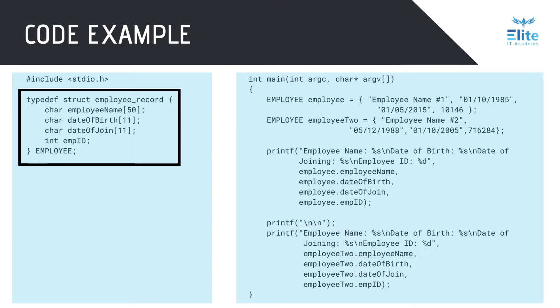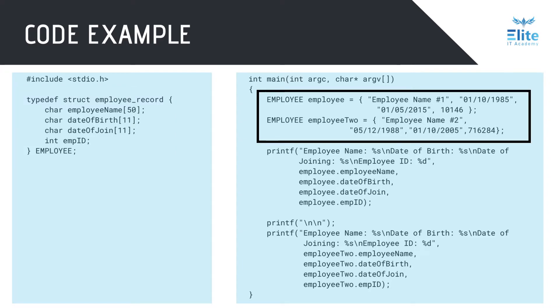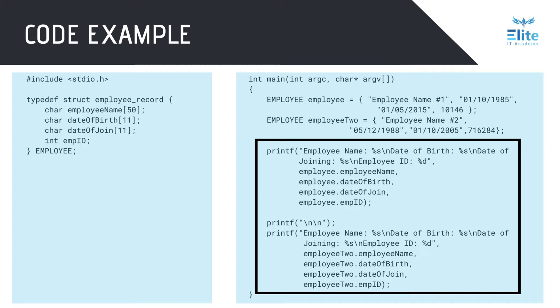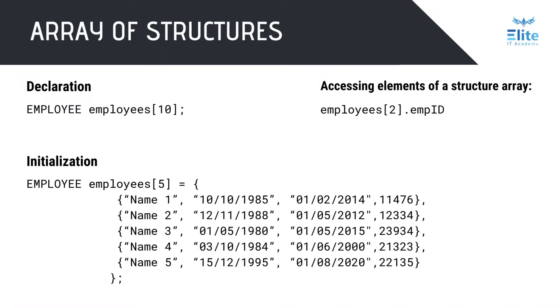In the code example shown, the user-defined data type called Employee is defined. Two variables are created with the type Employee and each member is initialized. The program then prints the value of each member of the two variables. Each argument of the printf function accesses every member of the structure variables, Employee1 and Employee2, using the dot operator. Like any other data type such as ints, floats, and chars, you can also have an array of structures.